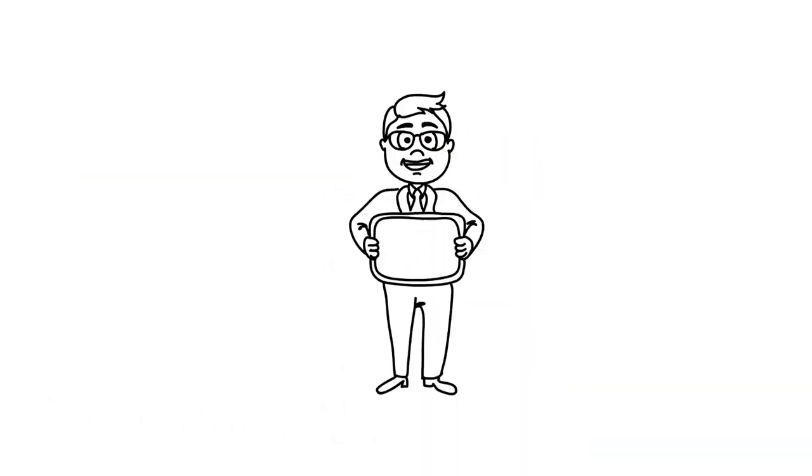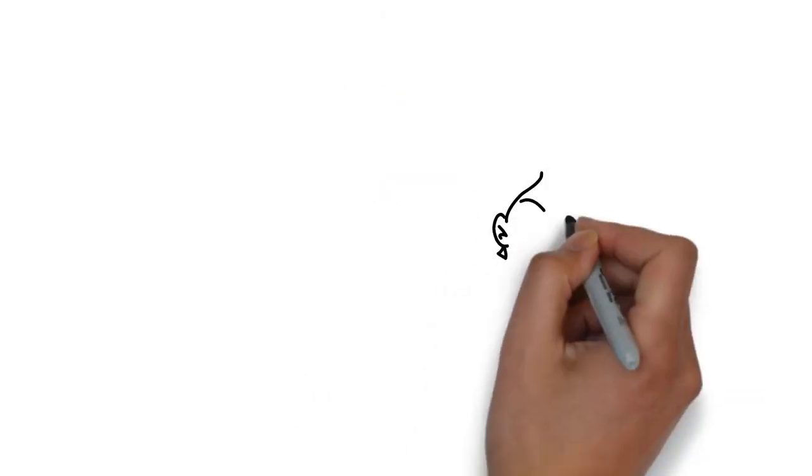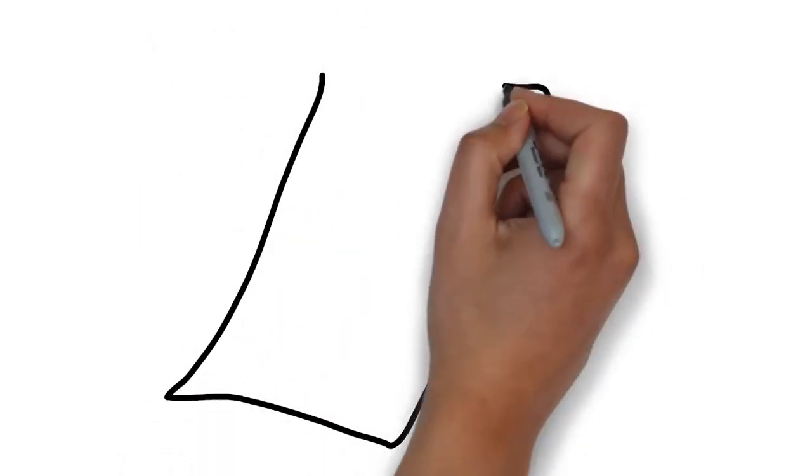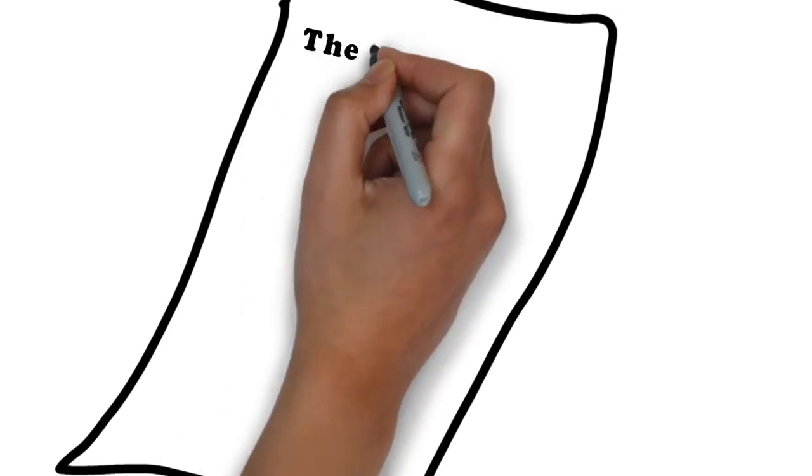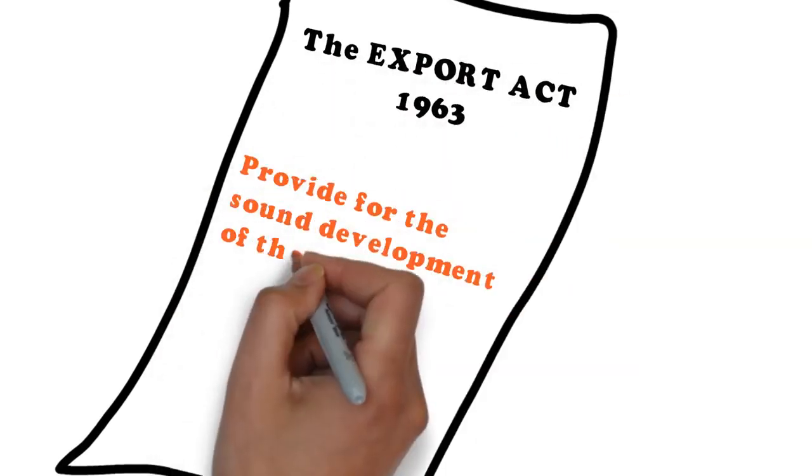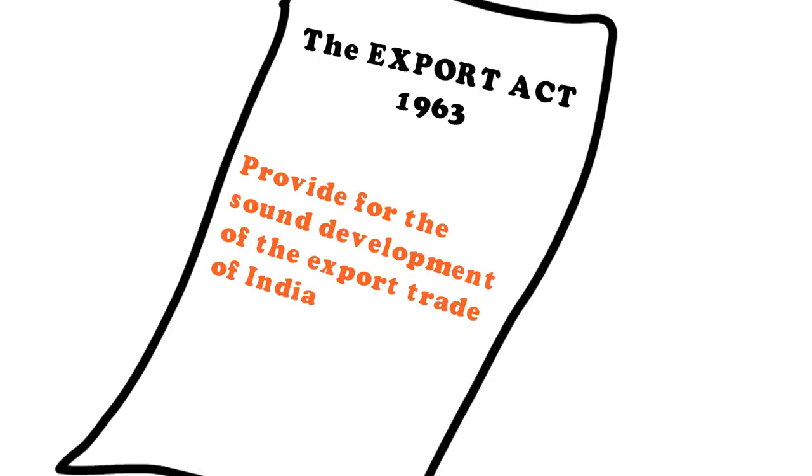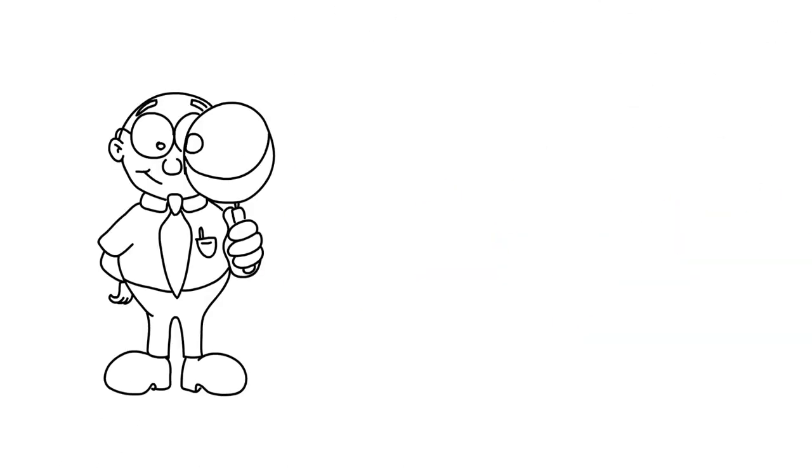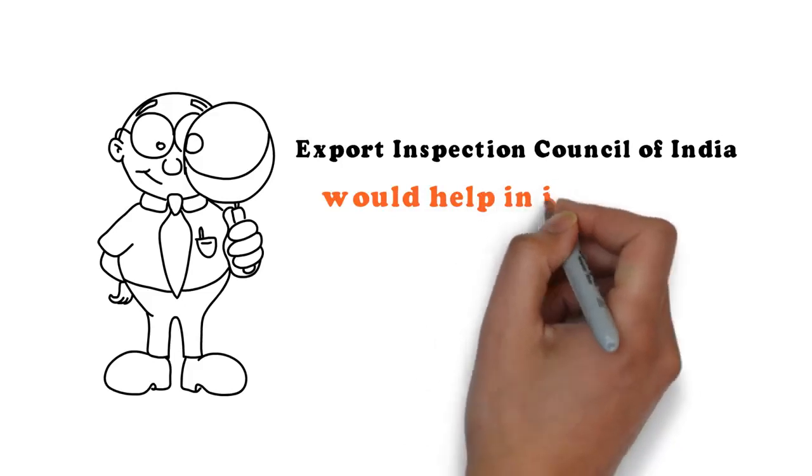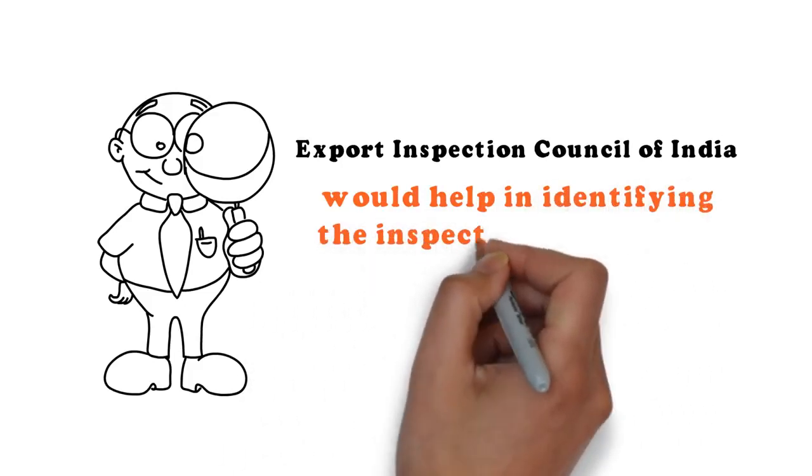Step 4. Next, Nikku needs to identify the inspection certificates required for exporting her coconut products. The Export Quality Control and Inspection Act 1963 provides for the sound development of the export trade of India through quality control and inspection. The Export Inspection Council of India would help in identifying the inspection certificates required for the given product.